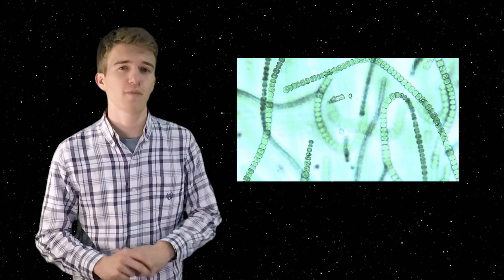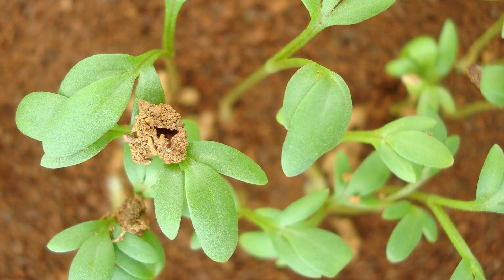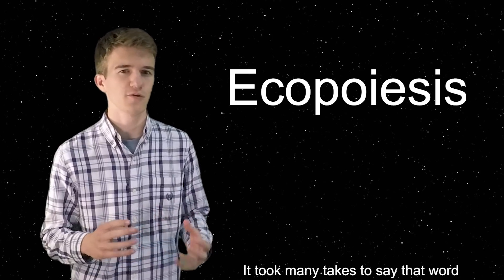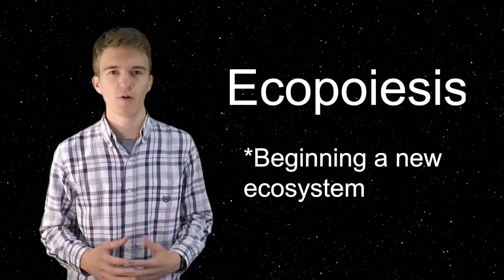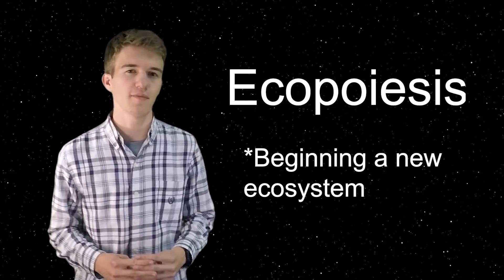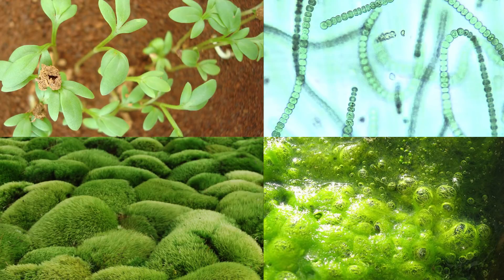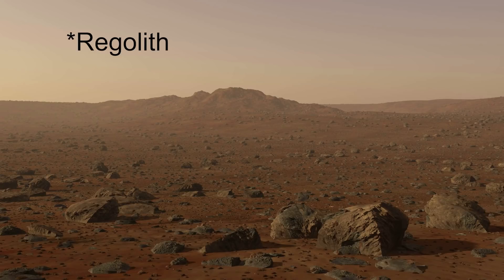The first way of converting the CO2 to oxygen is by following the steps that it happened here on Earth. By implementing cyanobacteria, algae, and plants, we would be starting a process called ecopiesis, which stands for beginning a new ecosystem. We would basically be creating a brand new climate on Mars, one that has bacteria, algae, moss, or plants. There are a few problems with implementing these organisms onto Mars, and this is the radiation and the soil, also known as regolith, on the surface.